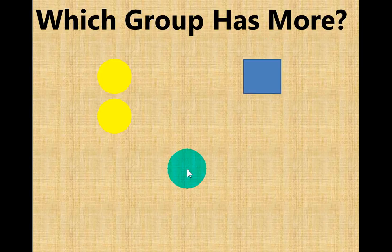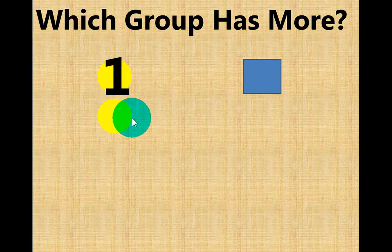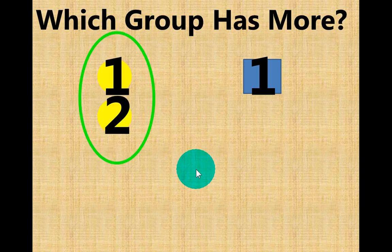Ready to practice some more? Which group has more — the yellow circles or the blue squares? Let's count. One, two — two yellow circles. One — one blue square. Which group has more? That's right, the yellow circles. We have two yellow circles.